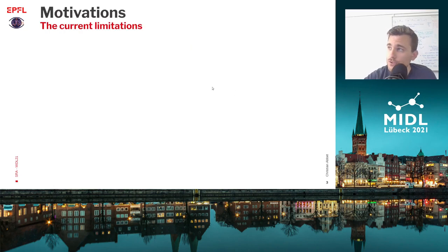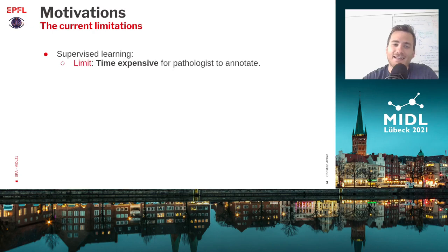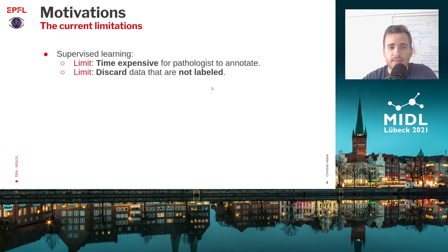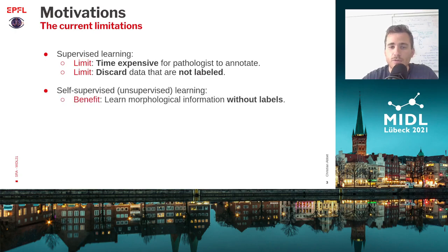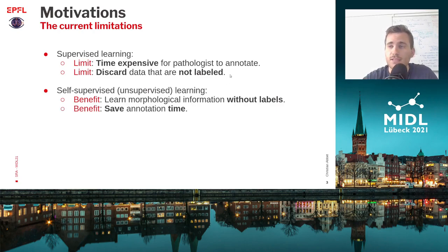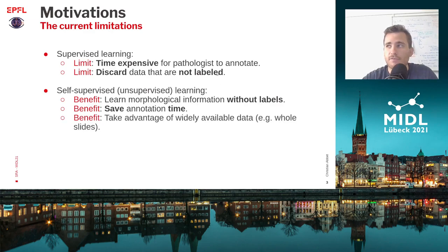Now about the motivation of our work: I guess some of you are working in the medical domain, and as you all know it is actually time-expensive to get annotation for data, and if you don't have annotation for those data and you're working with standard supervised learning, you cannot use them and they should be discarded, which is kind of a shame because usually you have thousands of them. This is why we chose to go in the direction of self-supervised learning, where you can use those unlabeled data to start learning morphological information and build good embeddings. As it is unsupervised, you don't need annotation, therefore you're saving all the annotation time with your pathologist, for example, and you can take advantage of all the data you have.